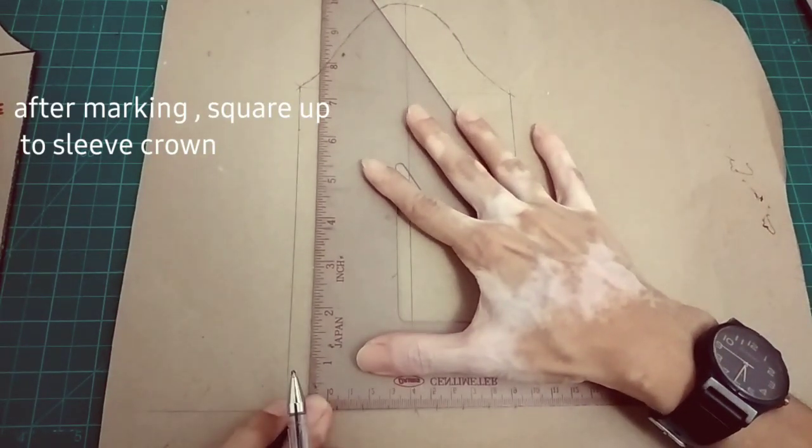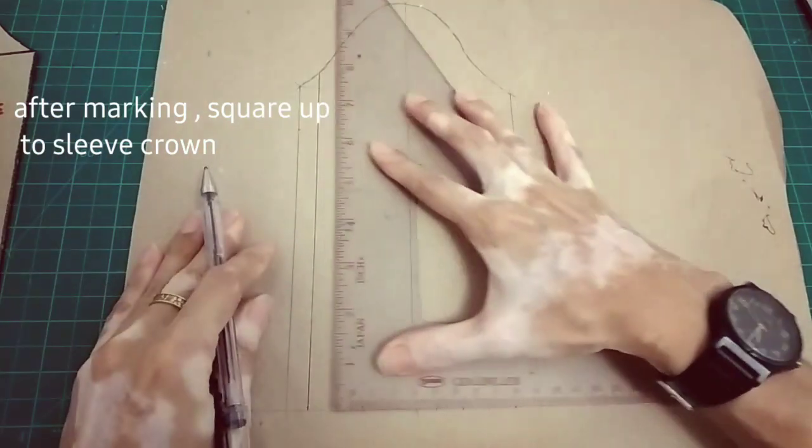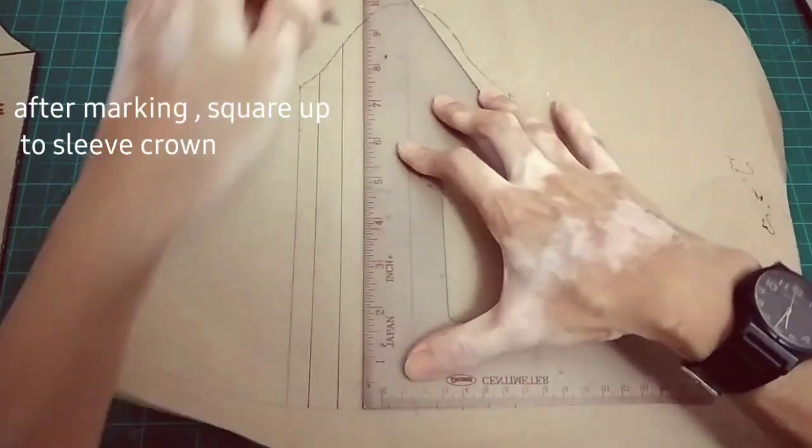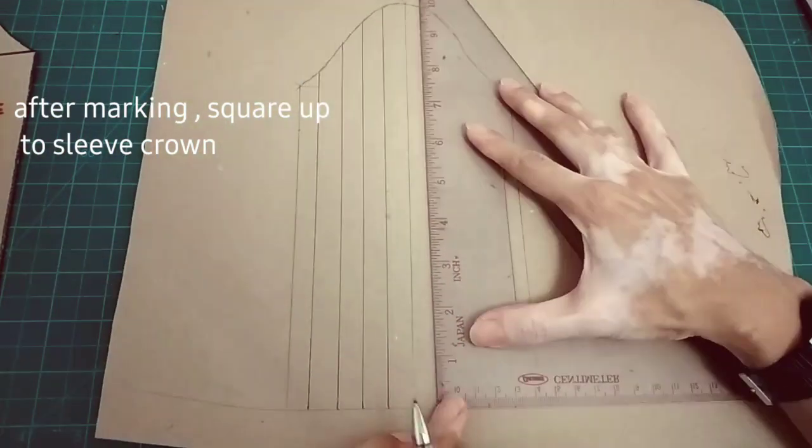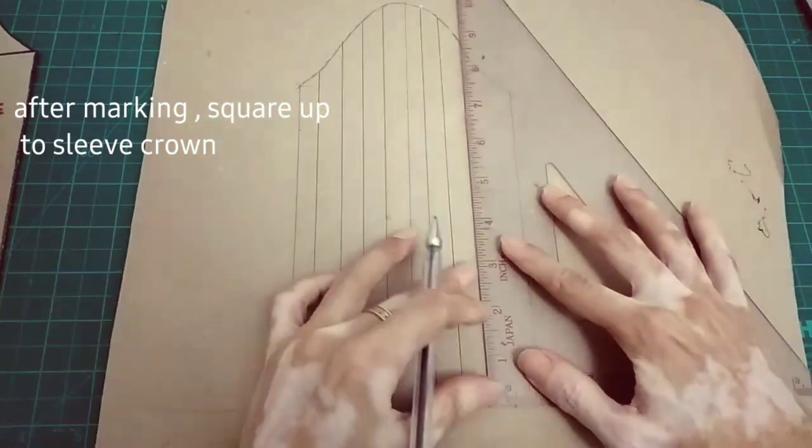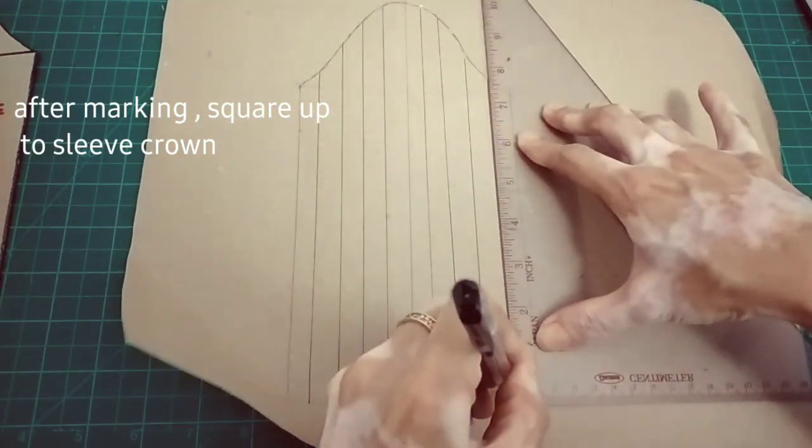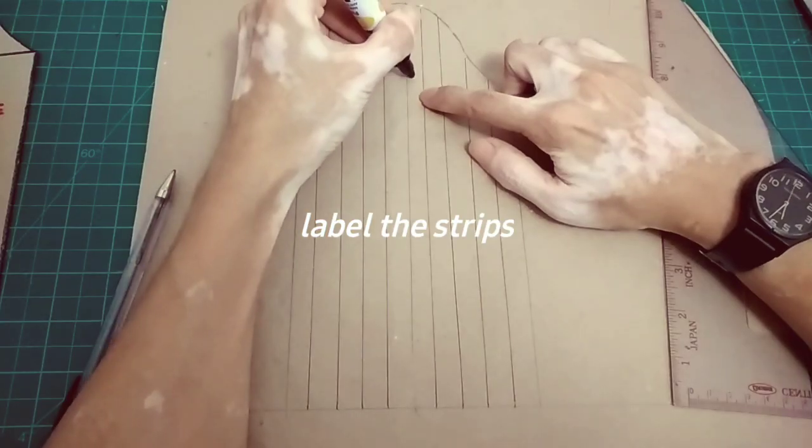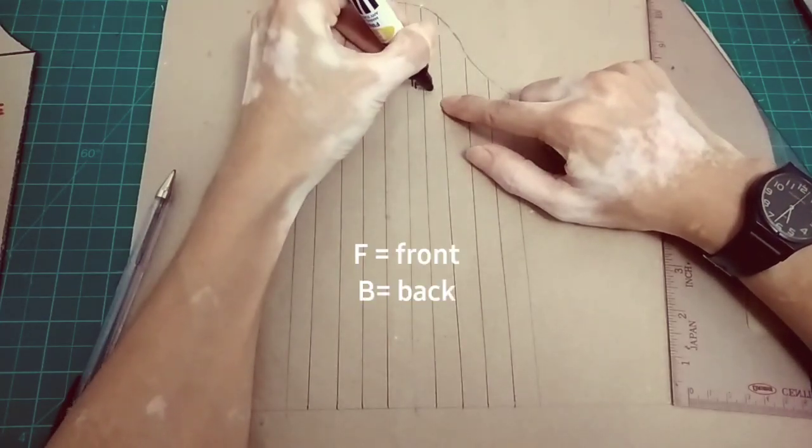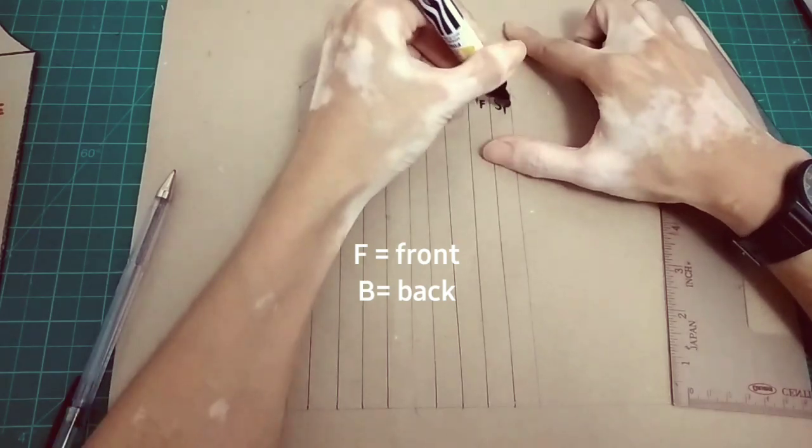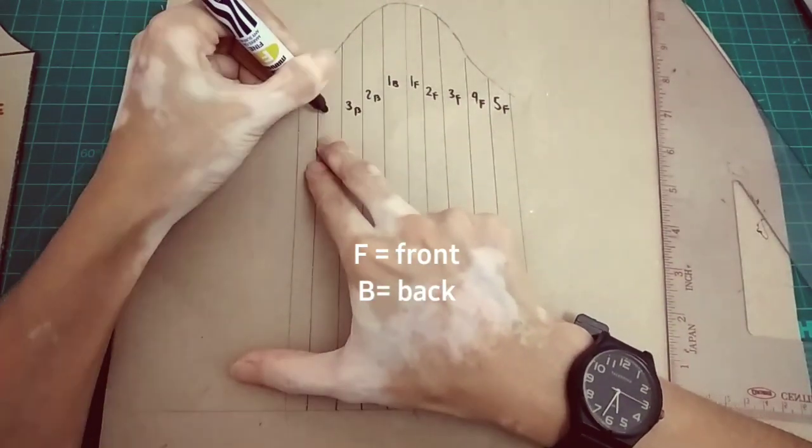After marking at the hem, square up to the sleeve crown. Next, we'll label the strips. F is for front and D is for the back.